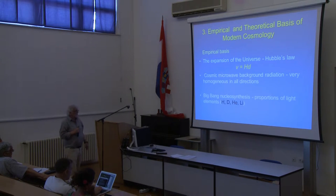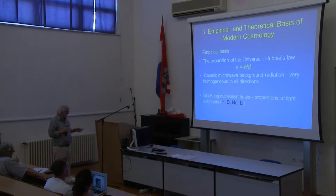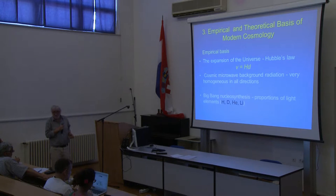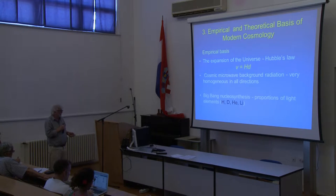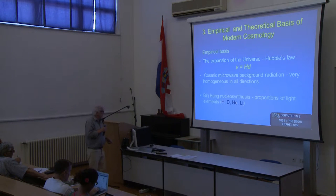How do we know this? We have empirical and theoretical bases. The three most important empirical pillars are: the expansion of the universe dictated by Hubble's law; the observed cosmic microwave background radiation, which is very homogeneous in all directions up to deviations of about 10 to the minus 5; and observed abundances of light elements like hydrogen, deuterium, helium, and lithium, from which we may deduce many important facts.